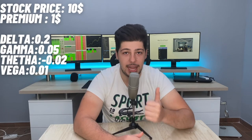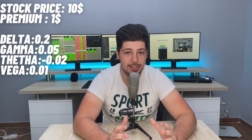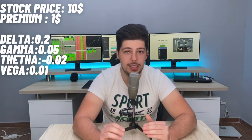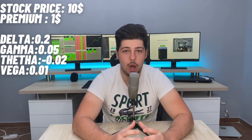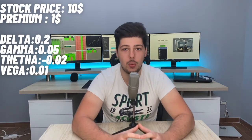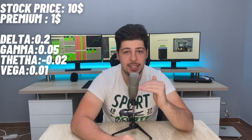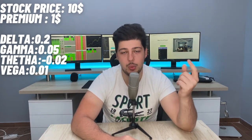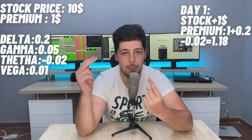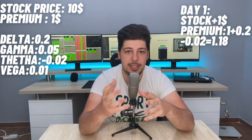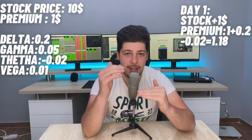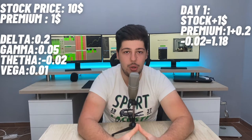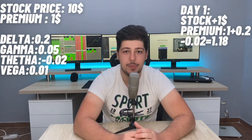Let's get back to our original example. The stock is $10, delta is 0.2, gamma is 0.05, theta is minus 0.02, and vega is 0.01, with an option price of $1. On the first day, the stock went from $10 to $11. Delta is 0.2, so our option goes from $1 to $1.20. But a day passed — we decrease by theta of 0.02 — so the premium is left at $1.18.